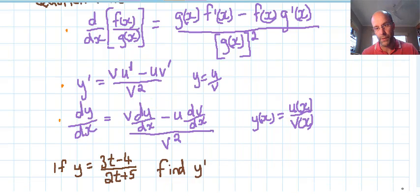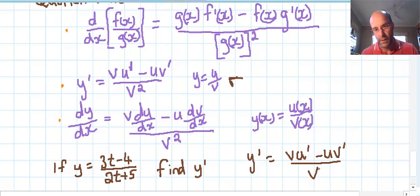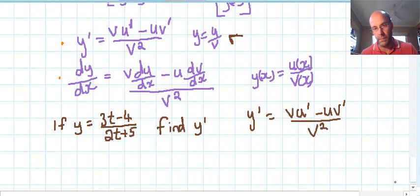So let's finish with an example. If we have y equals 3t minus 4 over 2t plus 5, find y dash. So I'm going to use this compressed notation here. So basically y dash equals v u dash minus u v dash over v squared. So we've got v. Remember v is on the denominator. We write v down: 2t plus 5. Put it in brackets to group it correctly. u dash is the derivative of the numerator, so the derivative of 3t minus 4 is just 3.